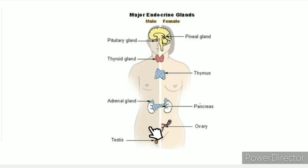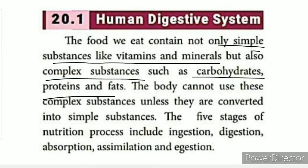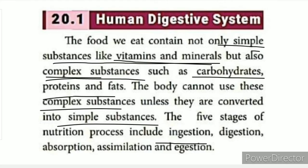Now we look at the human digestive system. Food is made up of simple and complex substances — vitamins and minerals are among these. Digestion breaks down complex food into simpler forms. There are five stages: ingestion, digestion, absorption, assimilation, and egestion.